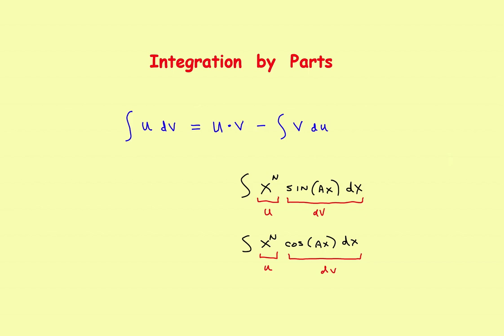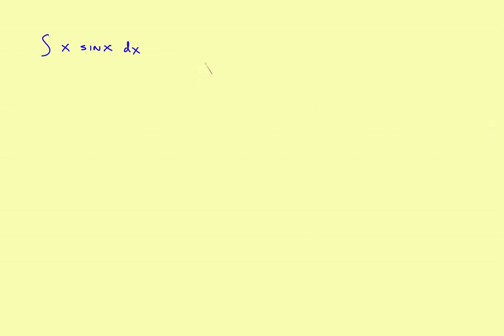With that in mind, let's take a look at a couple of specific examples. The first one is just going to require one use of integration by parts to get the correct answer. The second one will take a repeated use of integration by parts. The first problem is x times the sine of x dx. The second problem will be x squared times the sine of x dx — that's going to require the repeated use.